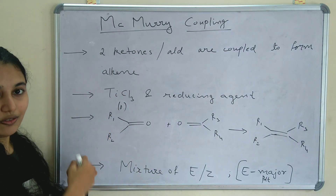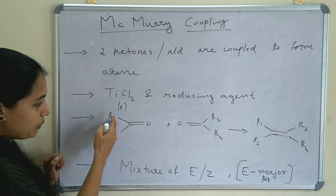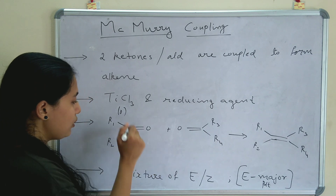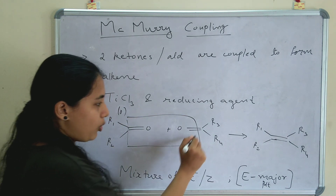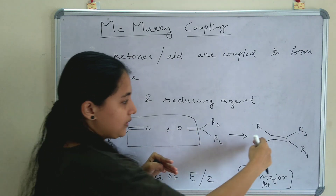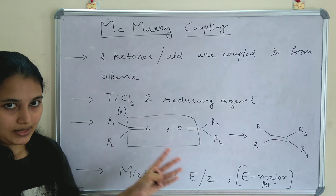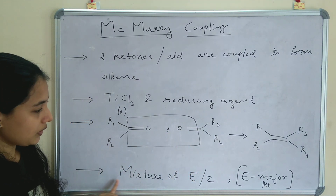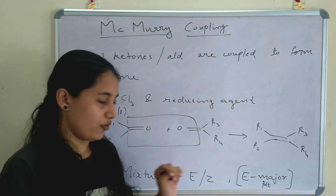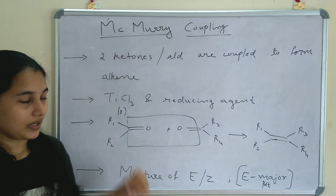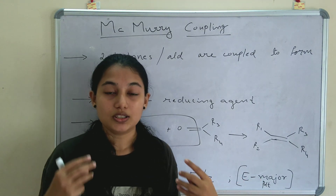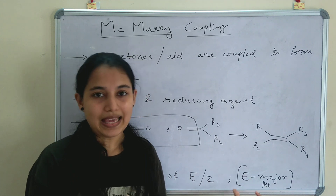This is the general reaction of McMurry coupling. We have a ketone R1-C(=O)-R2 and another ketone R3-C(=O)-R4, and these are coupled together. The C=O bonds are eliminated and an alkene with a double bond is formed. Another important point is that a mixture of E and Z isomers is formed, but the major product will be the E-alkene.